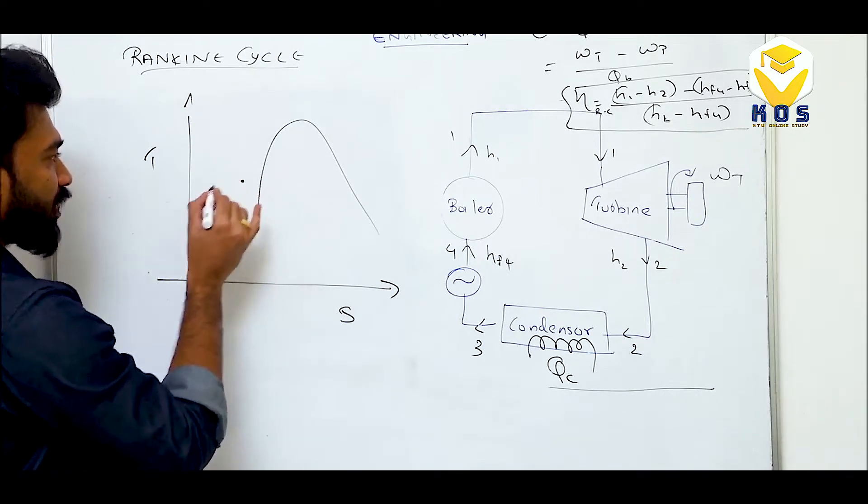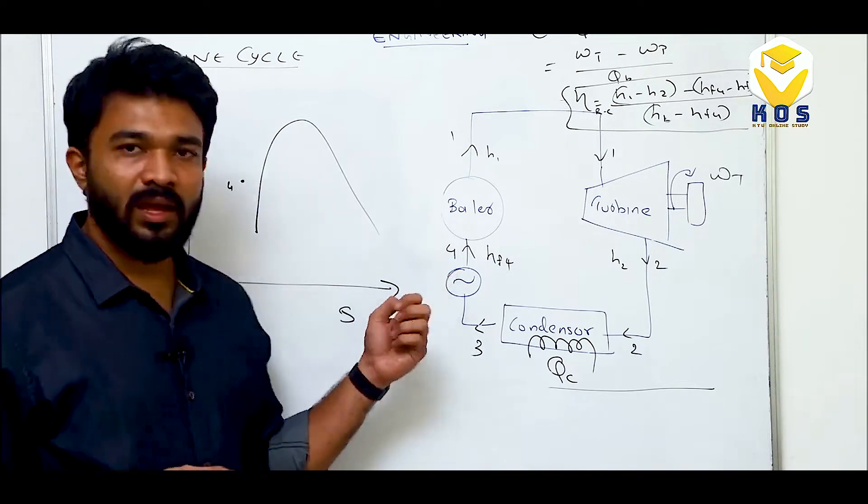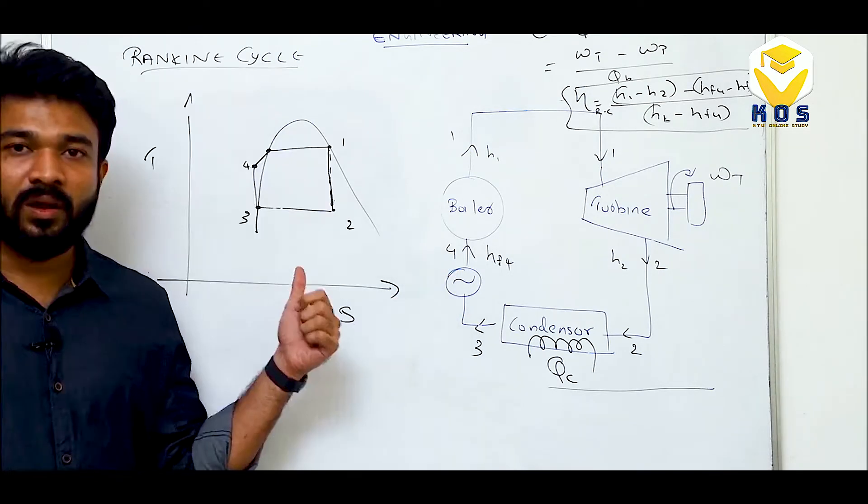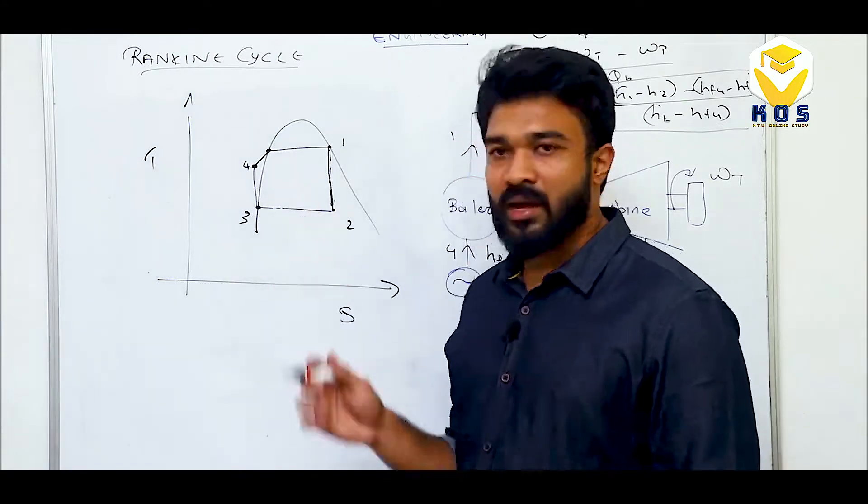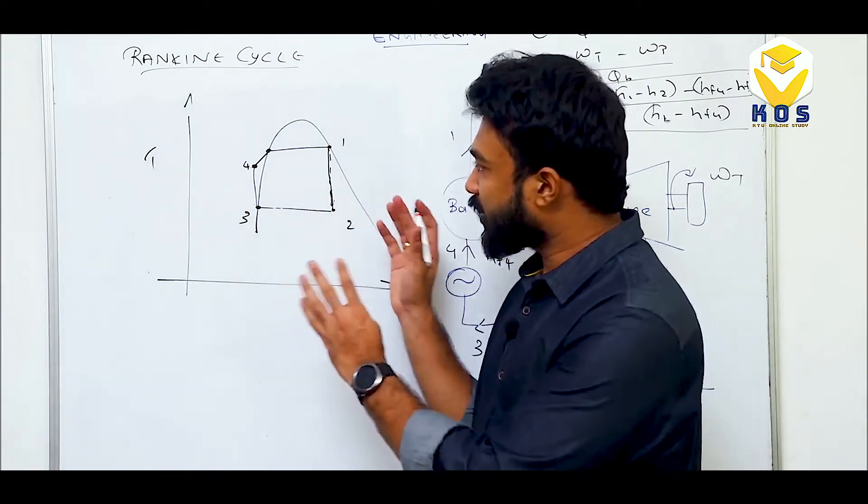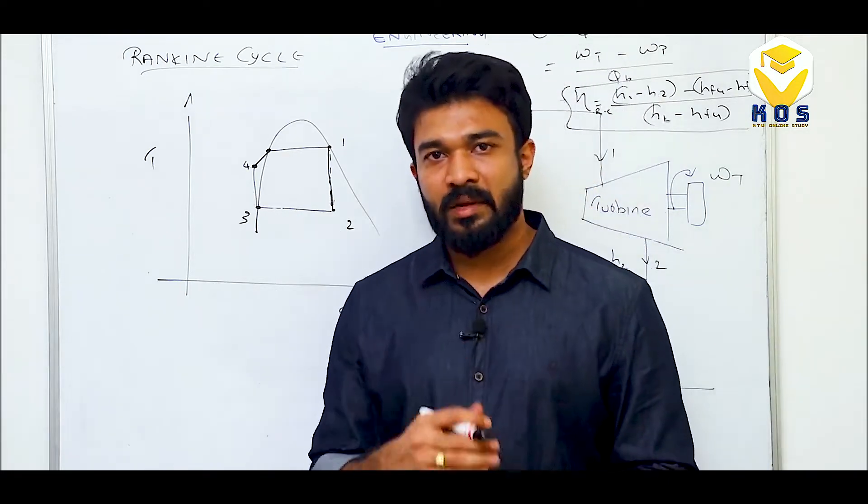Take this fourth point somewhere here. The reason is 4 means it is having some temperature. This is the T-S plane, where we use the steam table.